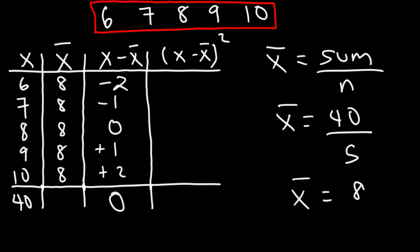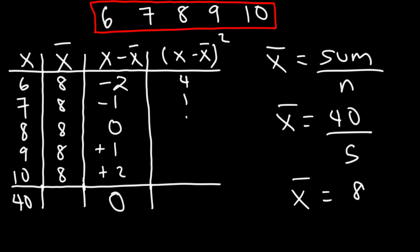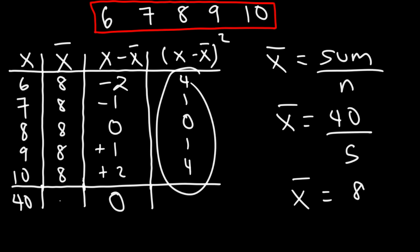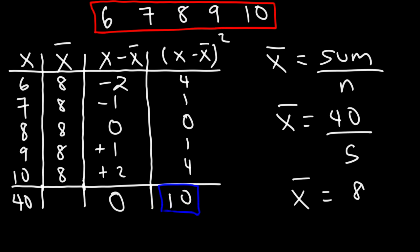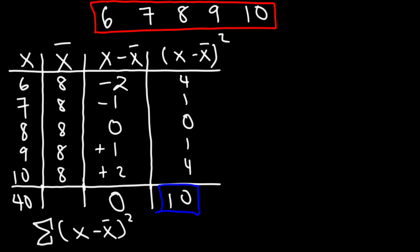Now we need to square the deviations. Negative 2 squared is 4, because it's negative 2 times negative 2. Negative 1 squared is 1. 0 squared is 0. 1 squared is 1. 2 squared is 4. Our next step is to add up the squared deviations: 4 plus 1 plus 0 plus 1 plus 4 adds up to 10. That number is the sum of the squared deviations, which we'll use to calculate the variance and standard deviation.